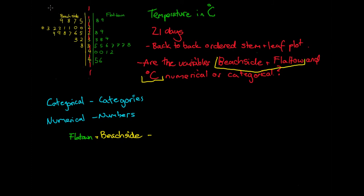On our left, we have one category, and that's the Beachside variables. And on our right, we have the other category, which is Flat Town. So we'd be leaning to say that our Flat Town and Beachside variables would be categorical, as they break our data into two categories. These being temperatures which I observed while I was at Beachside and temperatures I observed while I was in Flat Town.